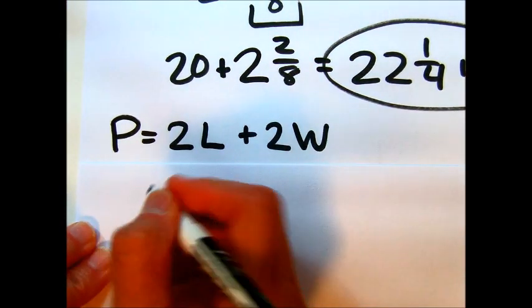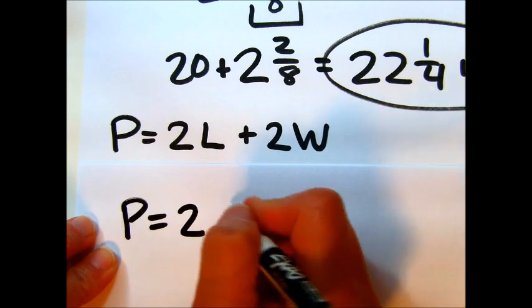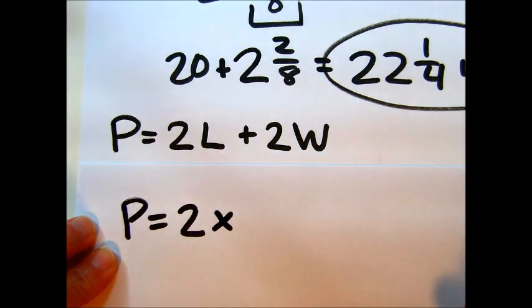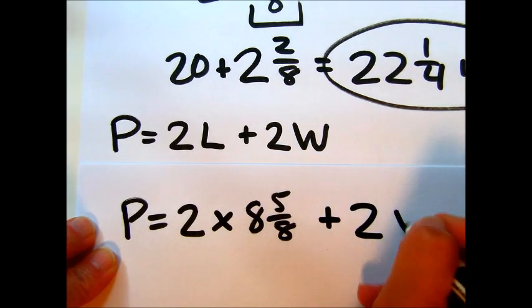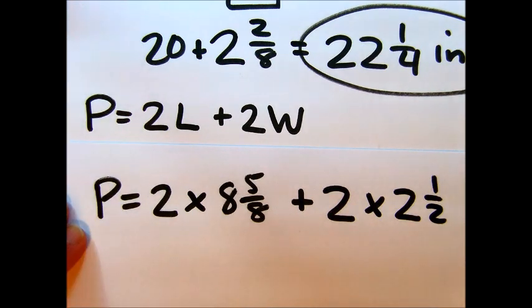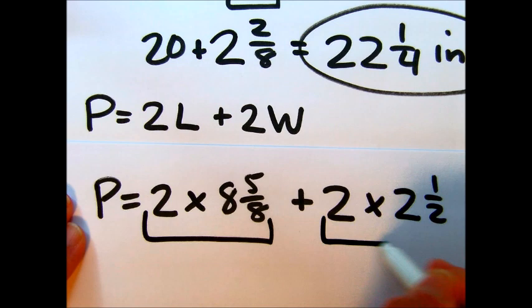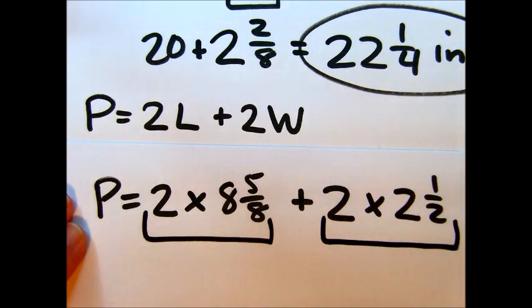So 2, that means because we had a top and a bottom. So P equals 2, and I'm going to go ahead and do a multiplication symbol, times 8 5/8 plus 2 times the width, which is 2 1/2. Order of operations states that we're going to do multiplication first. So we're going to take care of the multiplication on both sides and then we'll add up what we have.